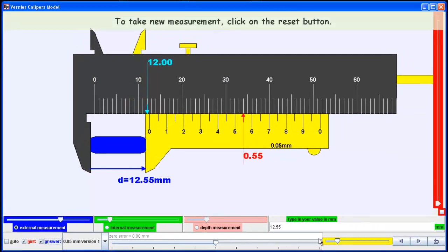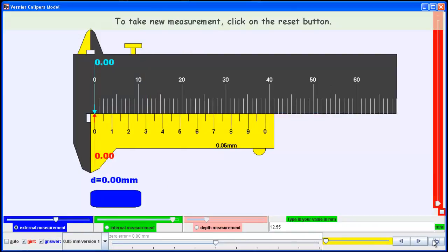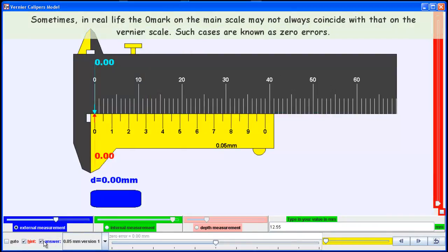To take a new measurement, click the reset button. Sometimes in real life, the vernier caliper may have a pre-existing zero error. This means that when the jaws are perfectly closed, the measurement is not exactly at the 0 mark.